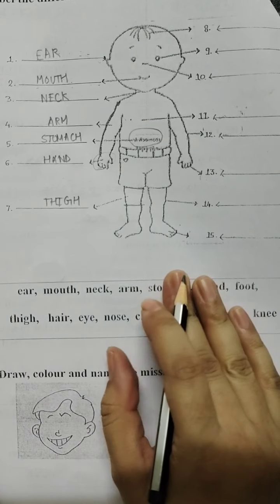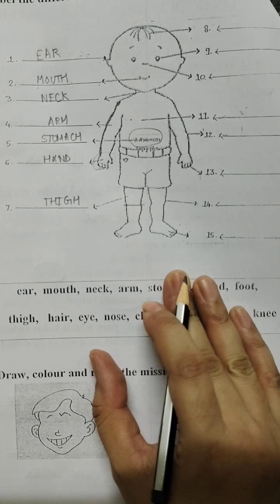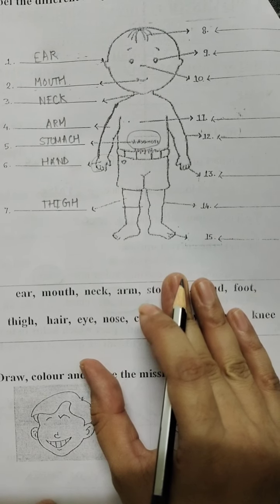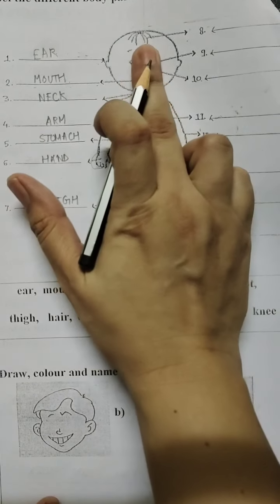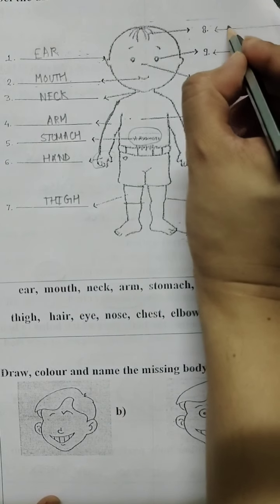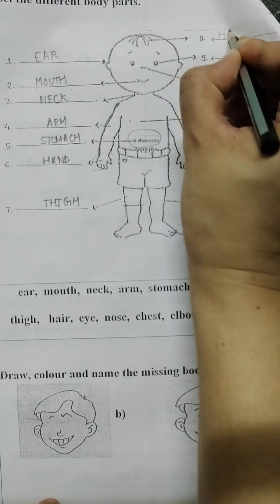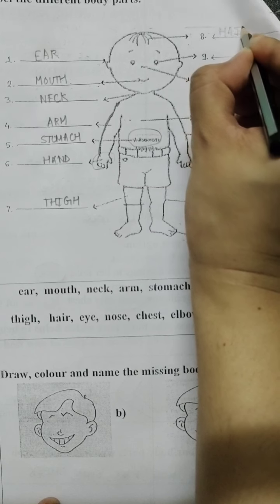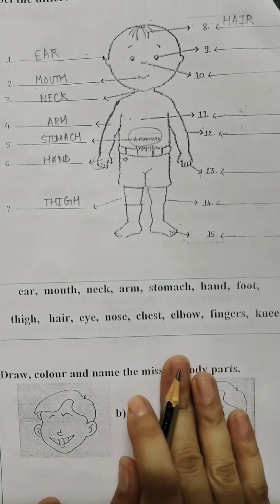Now students, we will come to the right hand side of the picture. Now carefully look. This is the thread like structure. What is it called as? It is called as hair. So we will write hair here.